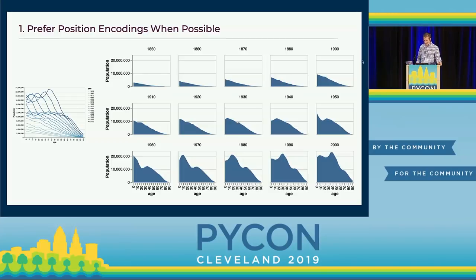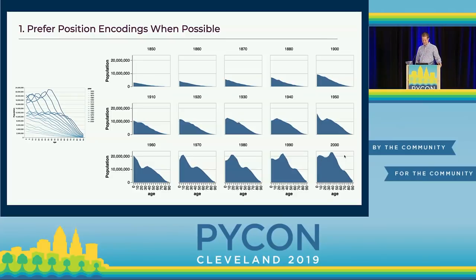Small multiples means making lots of different views of the data that change slightly from panel to panel. I love this visualization because you can sort of see — in 1950, here's the baby boomer bump — and you can follow them as they get older. Then here are the baby boomers' kids in 2000 starting to populate it. It sort of marches along to the right and then tapers off at later years.